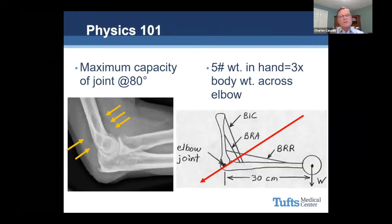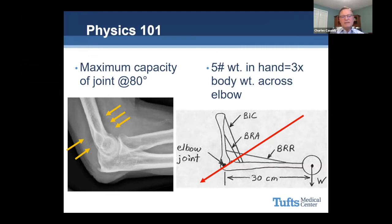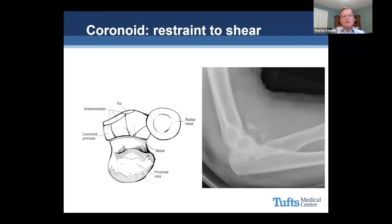Numbers three and four — physics 101. The maximum capsular capacity in the elbow joint is at 80 degrees. When the elbow is flexed beyond 80 or extended beyond 80, that increases pressure in the joint and causes discomfort. That's why patients who have elbow injuries tend to hold their elbow flexed, and why it's so hard to rehab these elbows — in full flexion or full extension, pressure is much higher. With the lever arm of your forearm, a five-pound weight in your hand produces about three times your body weight across the elbow, putting a lot of stress on the anterior radial head and the coronoid.